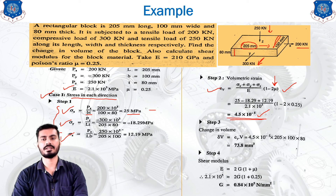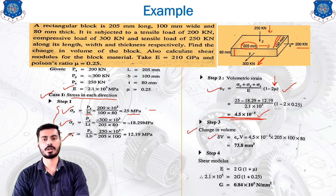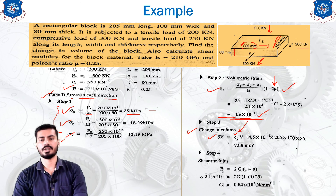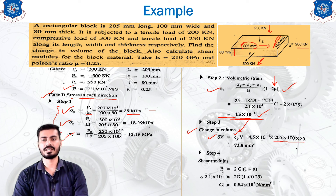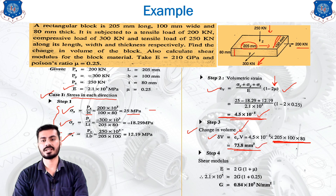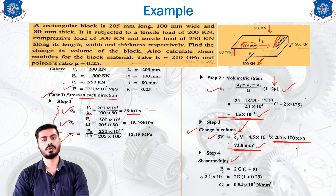The change in volume delta V = epsilon_V × V. We have epsilon_V = 4.5 × 10⁻⁵, and the original volume V = L × b × t using the given dimensions. By simple multiplication the change in volume is calculated as 73.8 mm³. Make sure to include the correct unit — since all dimensions are in mm, the unit is mm³, otherwise marks may be deducted.